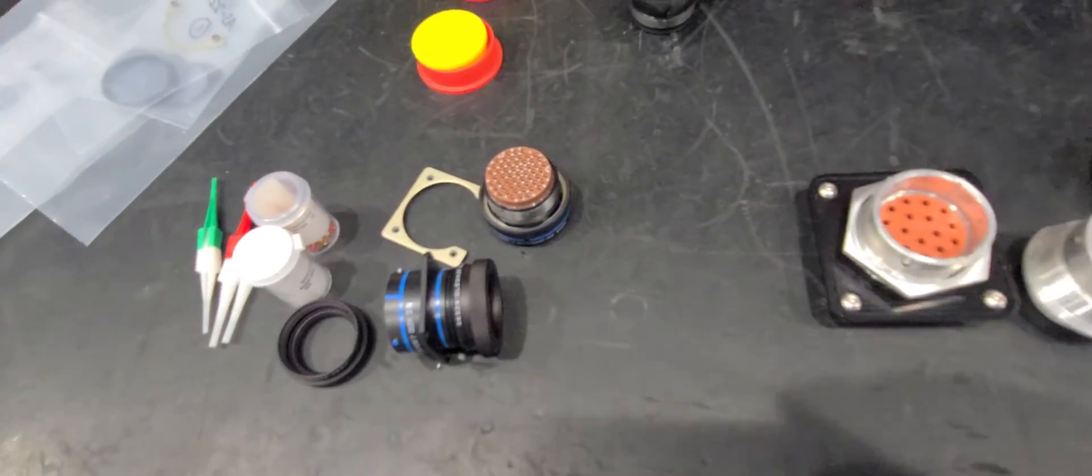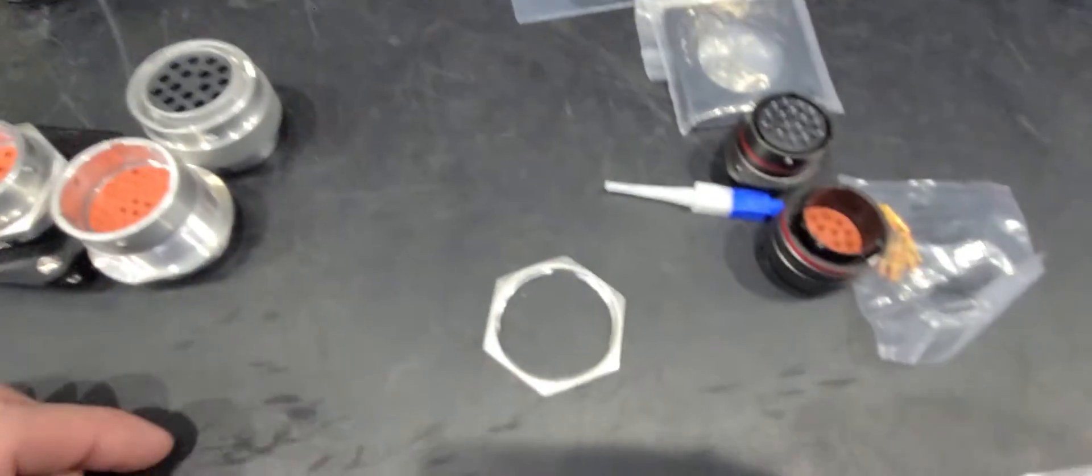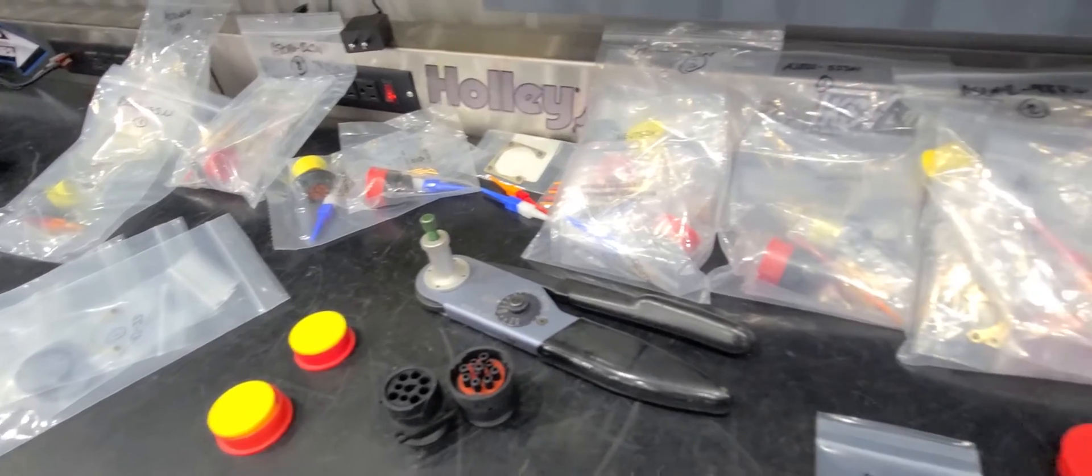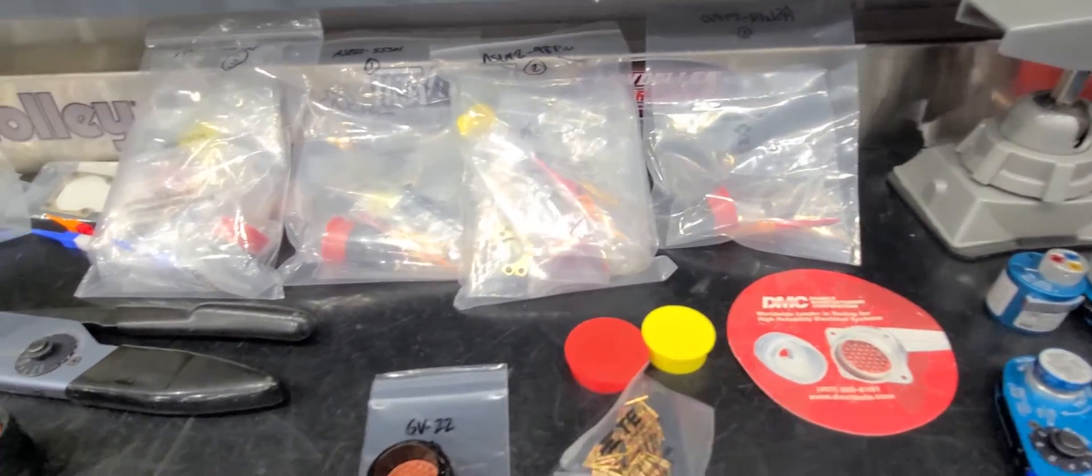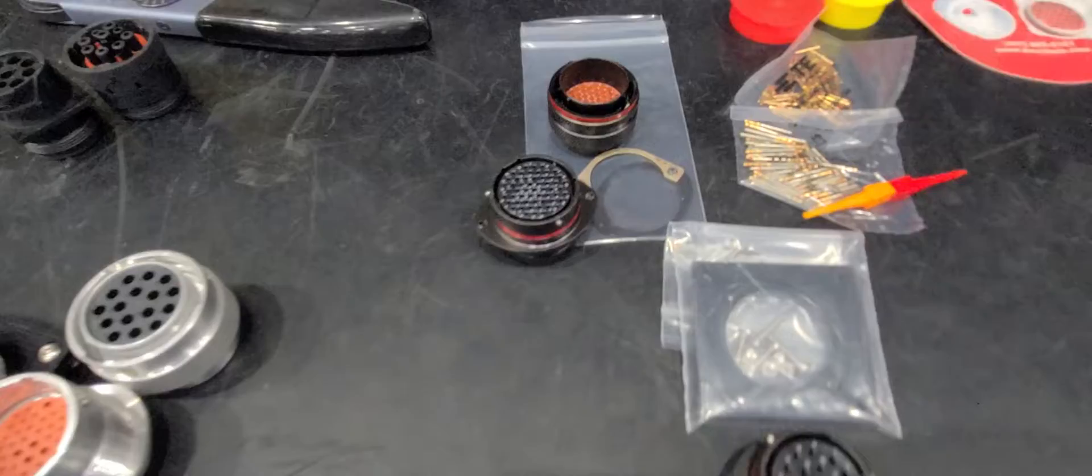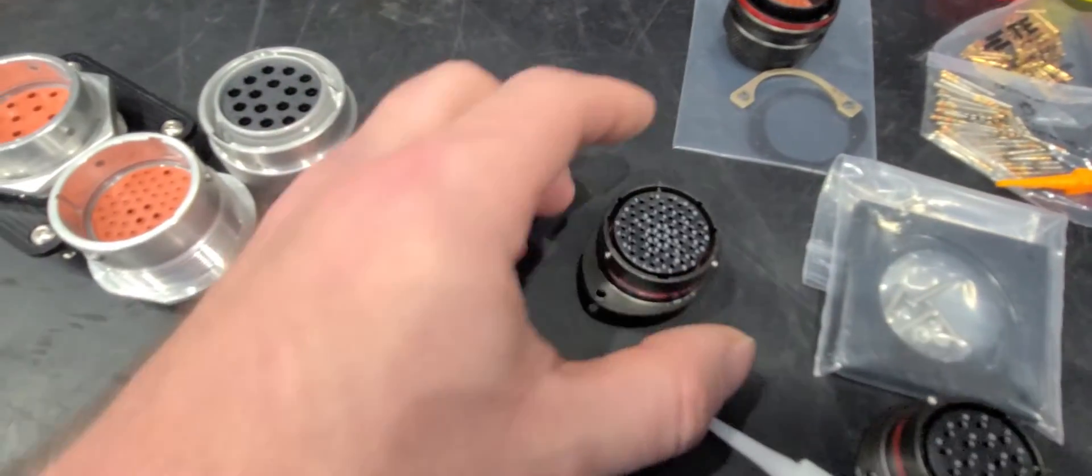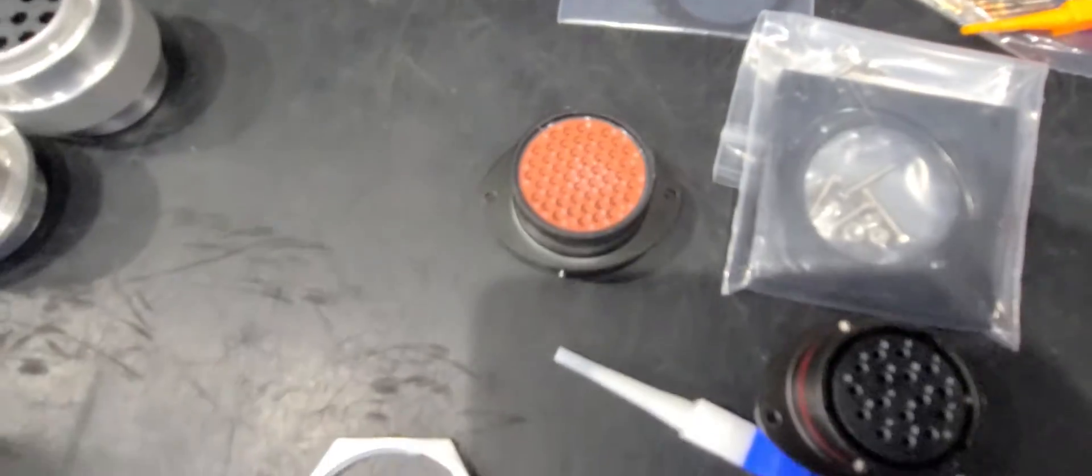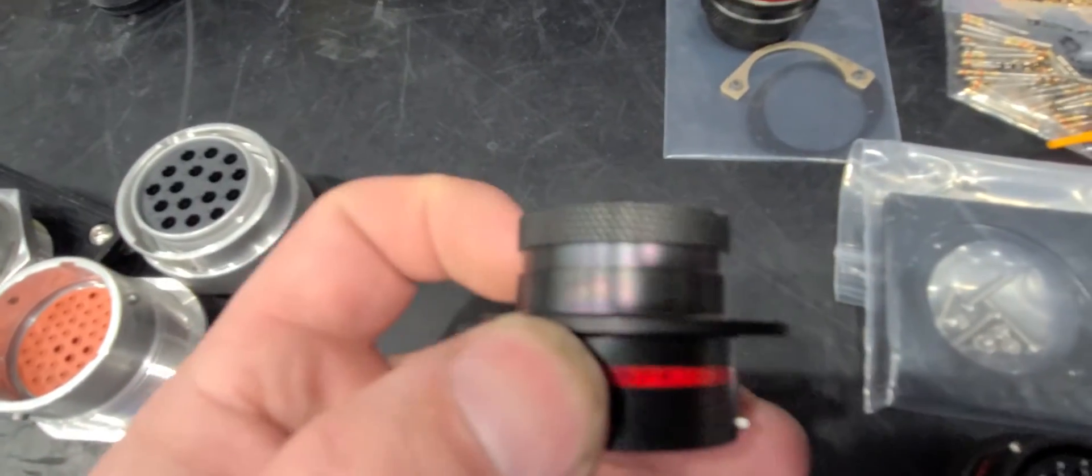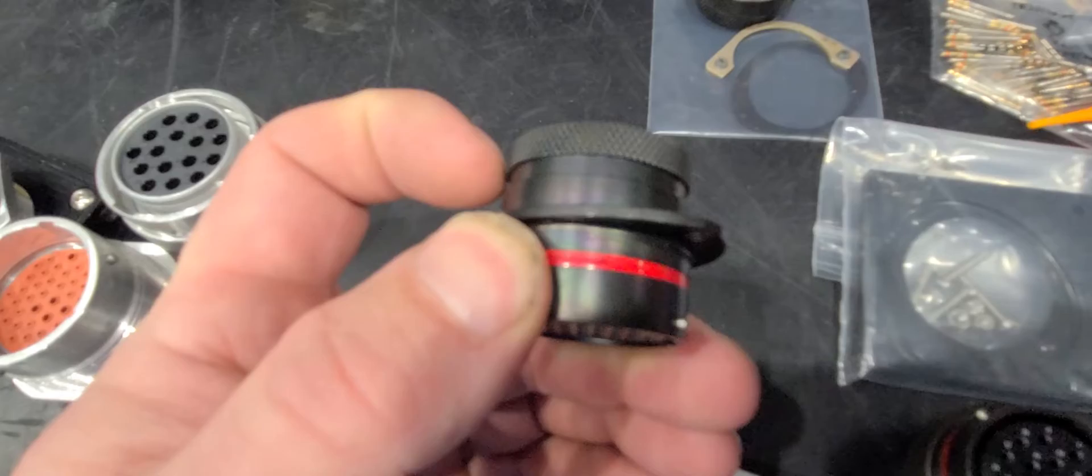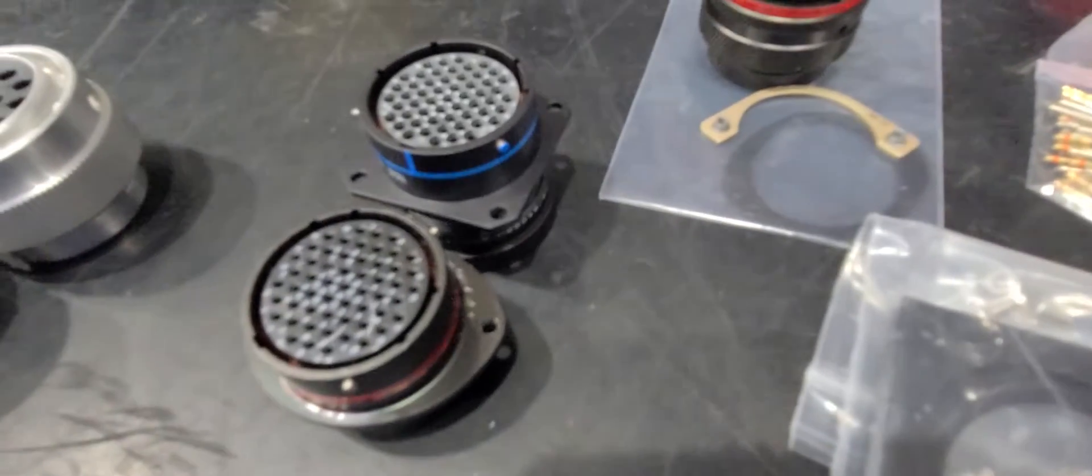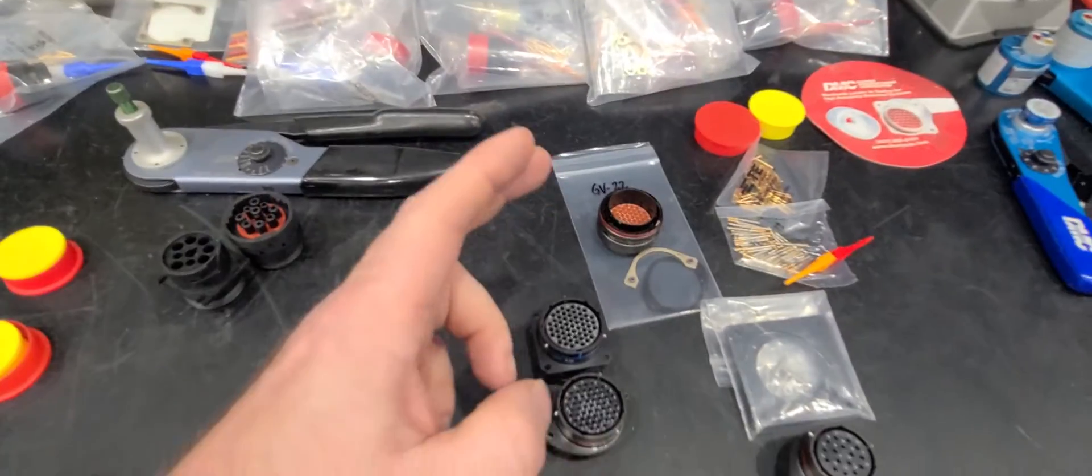So those are your two most common. And then myself, I really like these autosport connectors. These are from Deutsch. And if you notice, we've got a whole bunch of Deutsch here. I use these a lot, I've really become a very big fan of these as of recently. They're more expensive to be tooled for, but the end result, in my opinion, is a lot nicer. So these come in a very wide variety of configurations. This is a shell size 22. It already has a back shell built into it, so your shrink boot goes right on top of it.